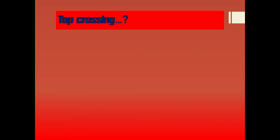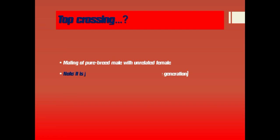Top crossing is another method of outbreeding. It refers to mating of a pure breed male with an unrelated female. This is just like grading up but only for one generation.